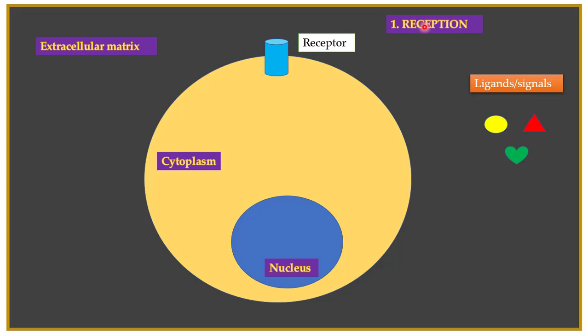In the first step of a signaling pathway, which is known as the reception, a particular ligand interacts with a particular receptor. It is important to keep in mind that the interaction between a receptor and a ligand is very specific, because it is this interaction that is responsible for generating a particular cellular response. Specific ligands interact with specific receptors to generate specific cellular responses.